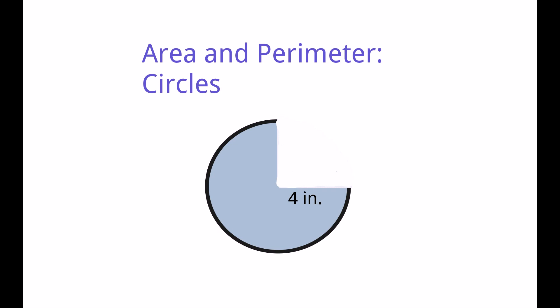Here's our example. We've got a circle with a radius of 4 inches, and there is a portion of it missing. There's one-fourth of the circle missing, so we're going to be finding three-fourths of the area.